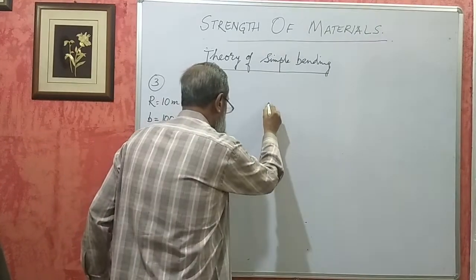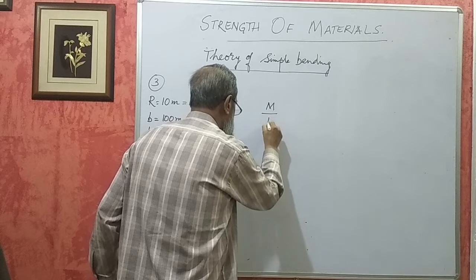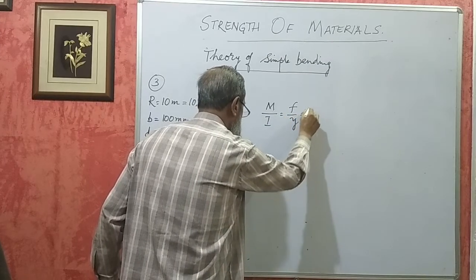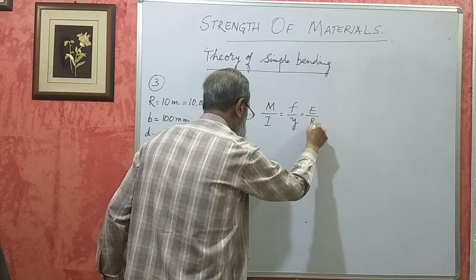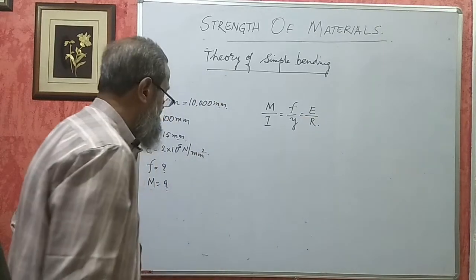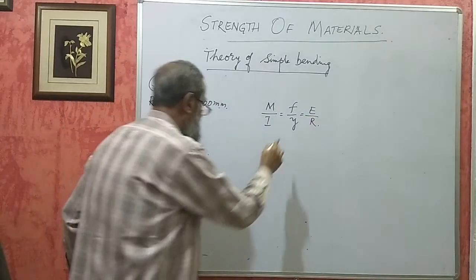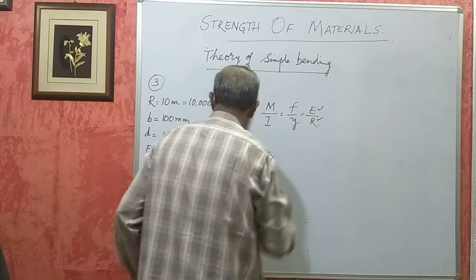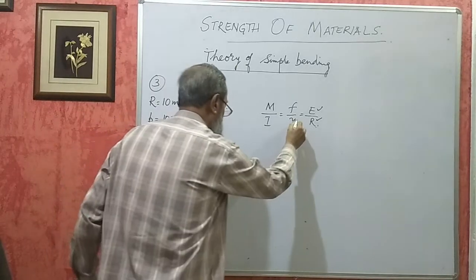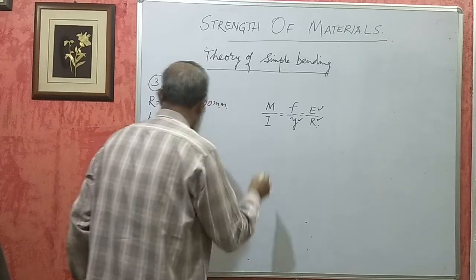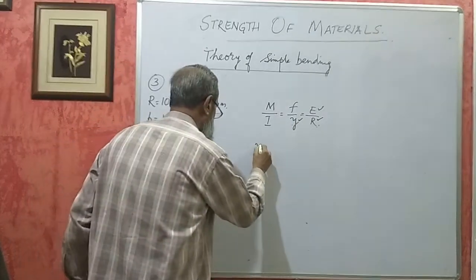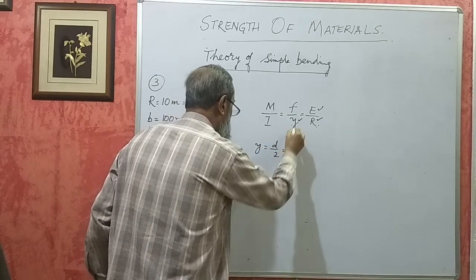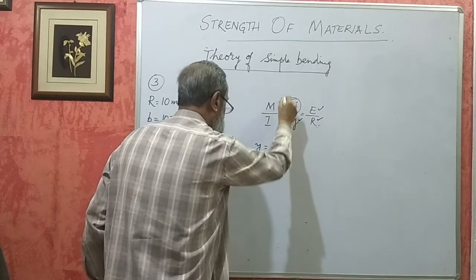We have the equation M/I = F/Y = E/R. If we take the last two parts, we know E and we know R — both are given. Y can be obtained as D/2. So if we know Y, we can get F by taking the F/Y = E/R part.